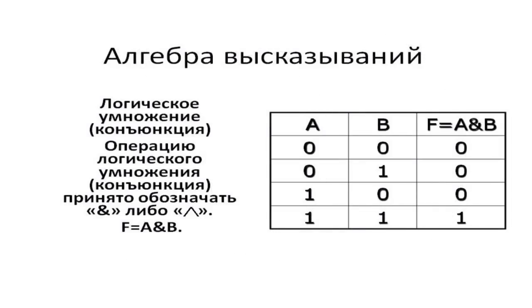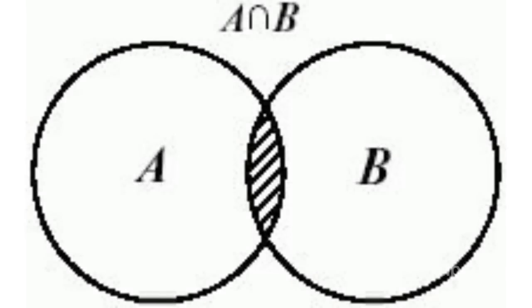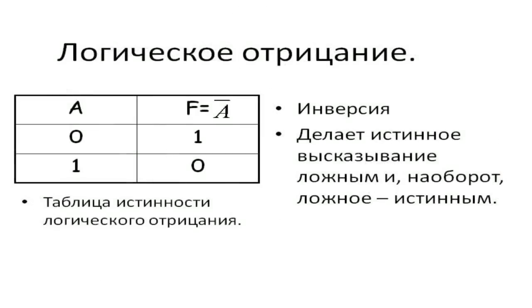Logical conjunction is an operation also known as AND. The function is true if both operands are true. It corresponds to the mathematical operation of intersection of sets. Negation is an operation also known as logical complement. The function is true if the variable is false, or vice versa.